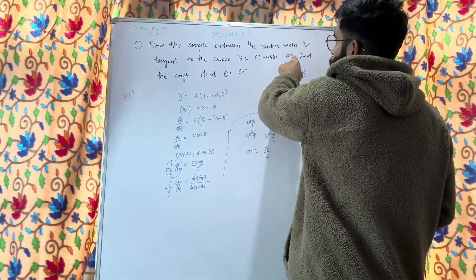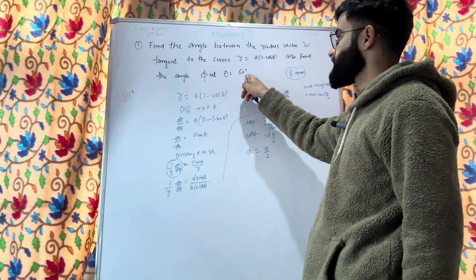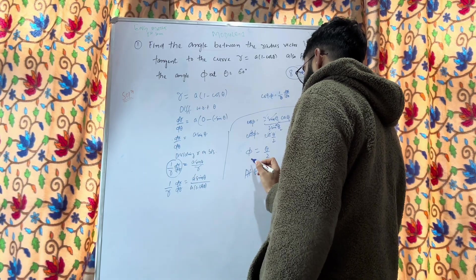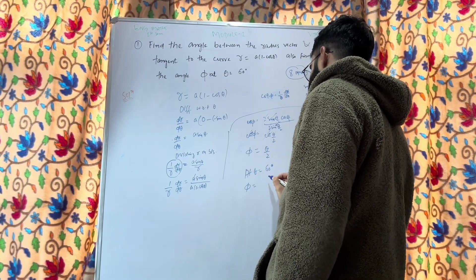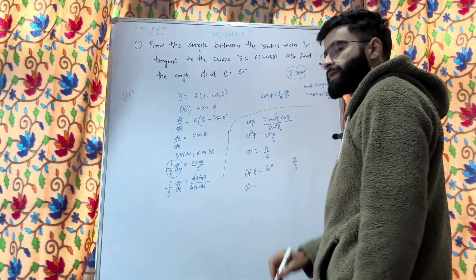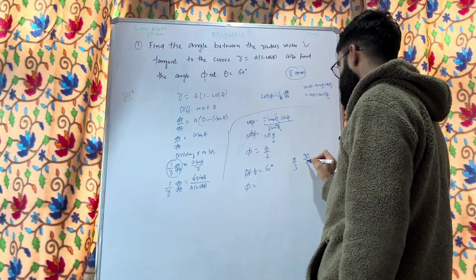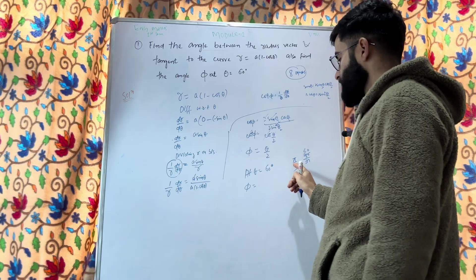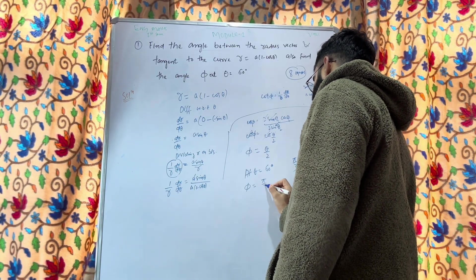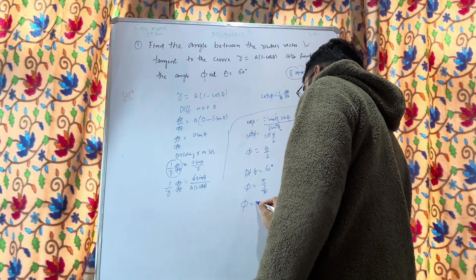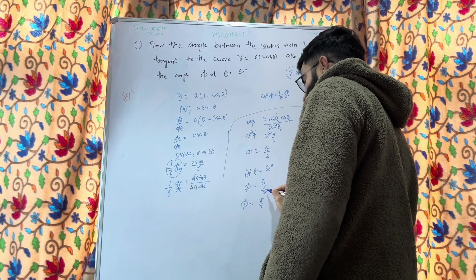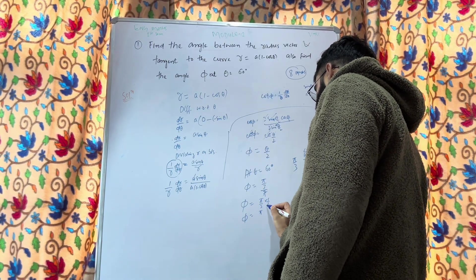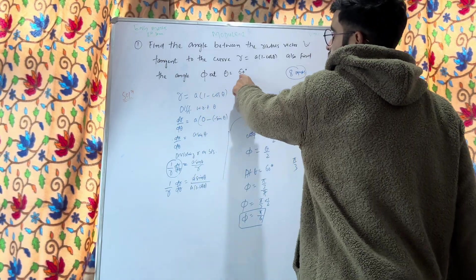For the second part, we find φ at θ = 60°. Substituting θ = 60° = π/3 into φ = θ/2, we get φ = (π/3) / 2 = π/6. So φ = π/6 is the angle between the radius vector and the tangent at θ = 60°.